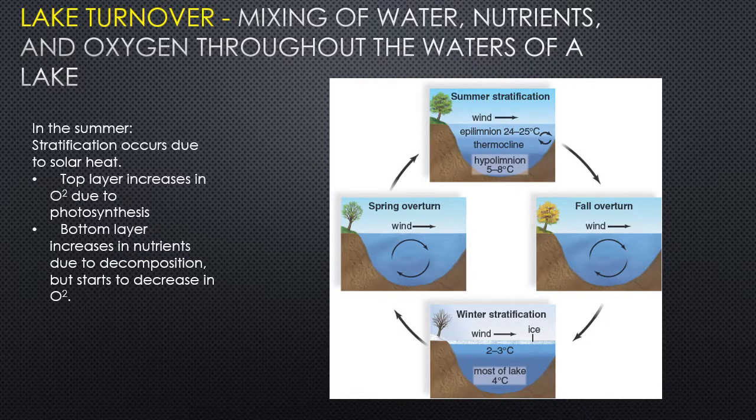Lake turnover occurs in every lake. It is a mixing of the water, nutrients, and oxygen throughout the water column. Think of a typical lake like Jordan Lake — in summer, stratification occurs due to solar heat.